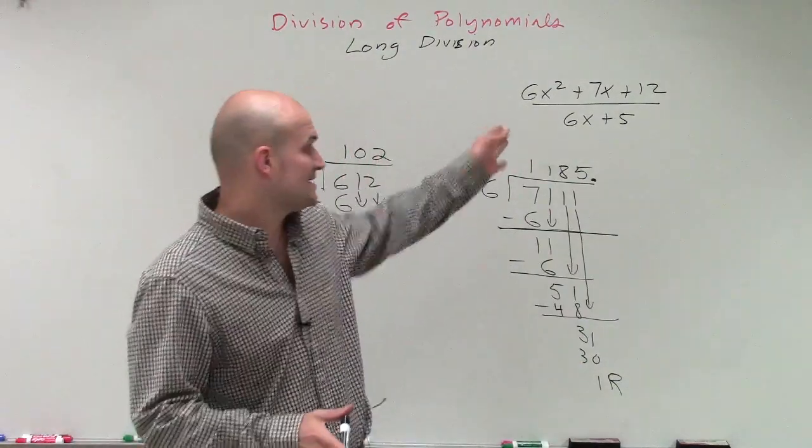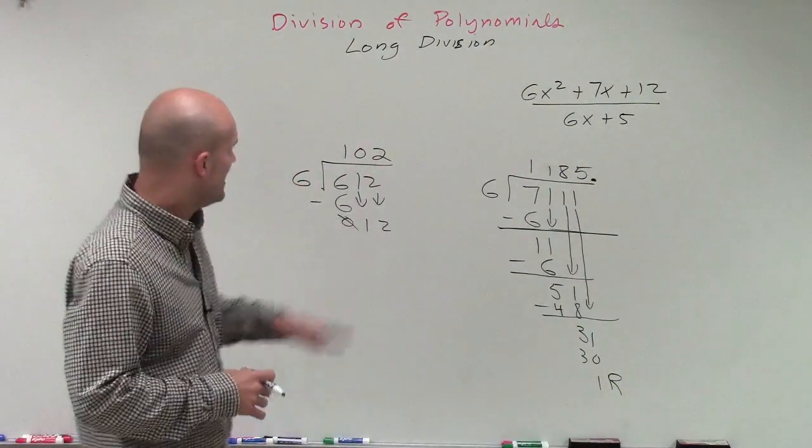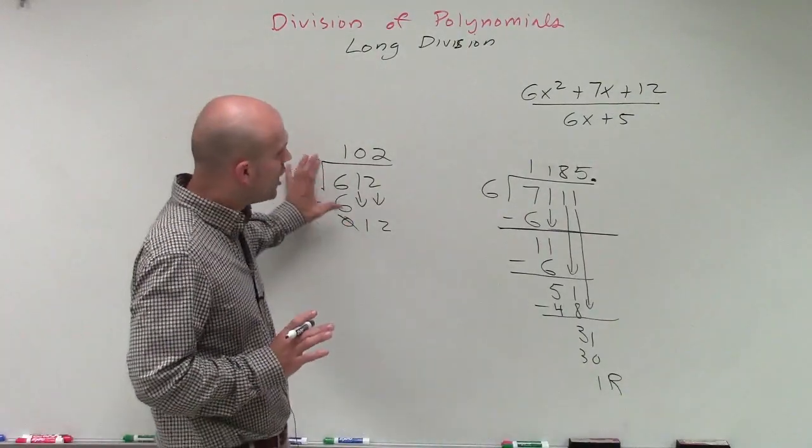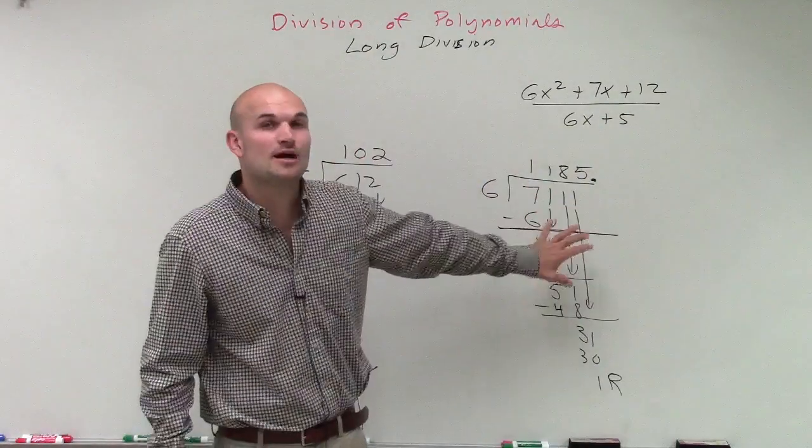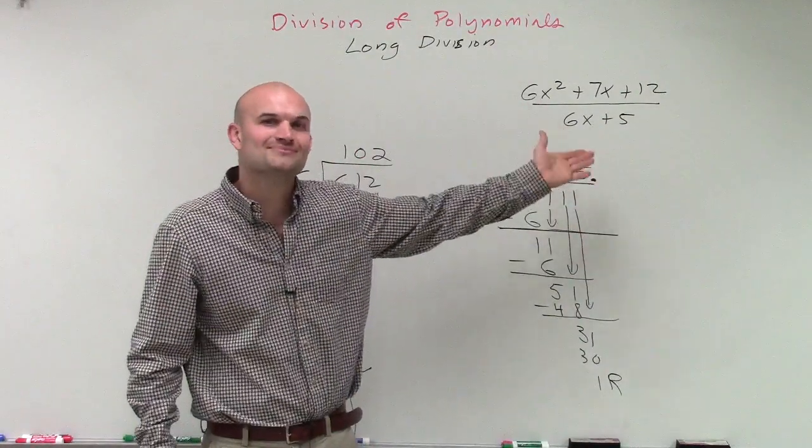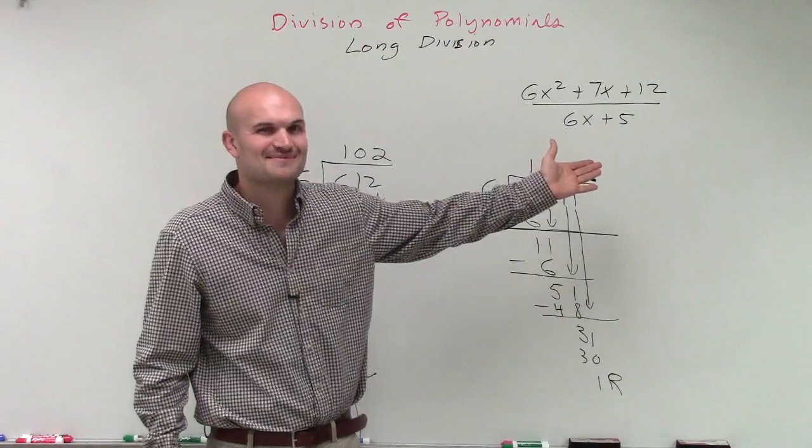And we're going to write the remainder a little bit different when we're using polynomials. And this, we have a remainder of 0. But we're going to write it a little bit differently. But I just wanted to kind of go through the algorithm of how we do long division with numbers, so therefore, we can apply it when we're going to have polynomials. Hope that helped. And here we go to some more fun examples. Thanks.